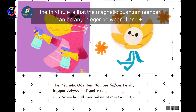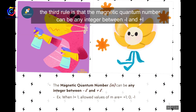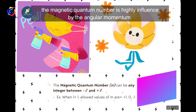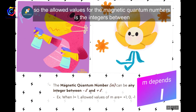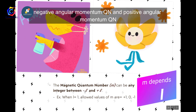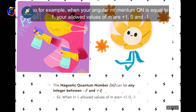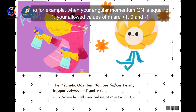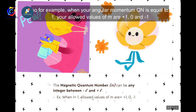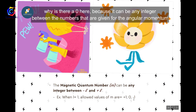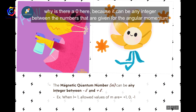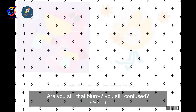The third rule for the magnetic quantum number: m can be any integer between negative l and positive l. For example, when the angular momentum quantum number l equals 1, the allowed values of m are +1, 0, and -1. Zero is included because m can be any integer between the given range.